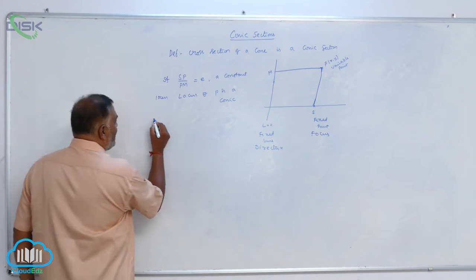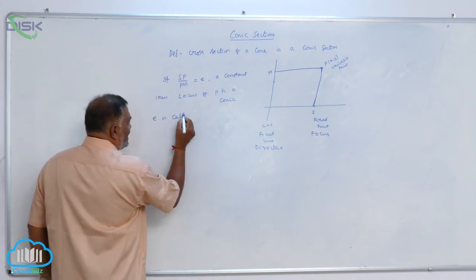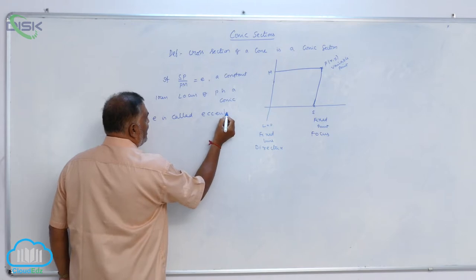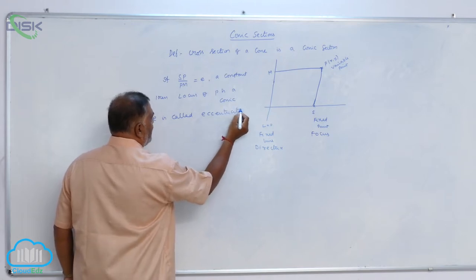Here, E is called eccentricity. E-C-C-E-N-T-R-I-C-I-T-Y, eccentricity.